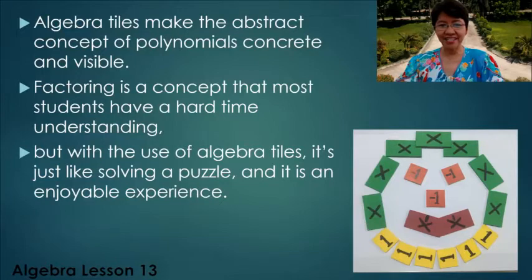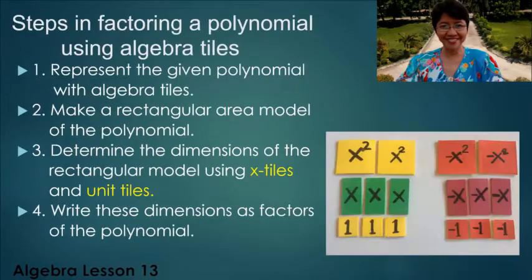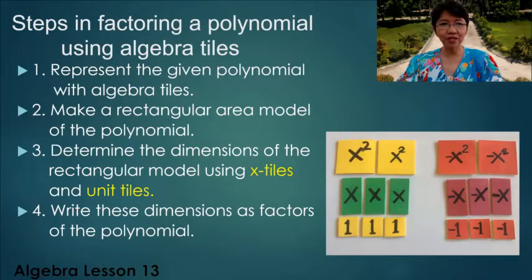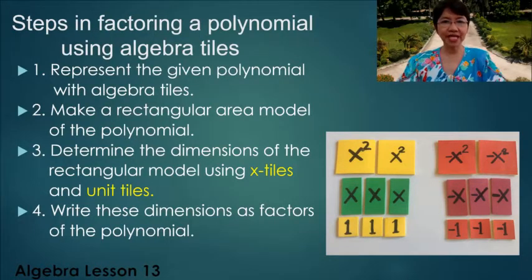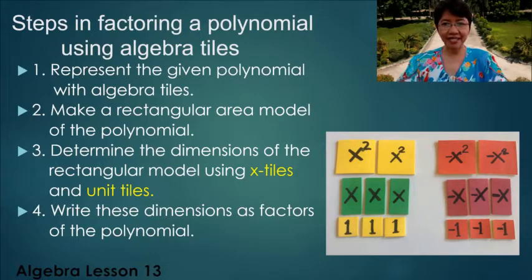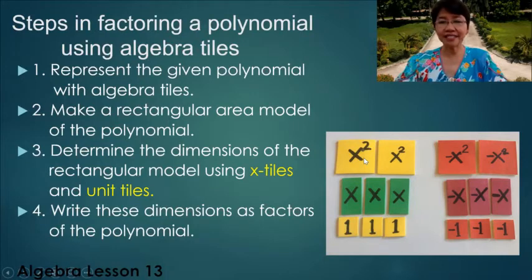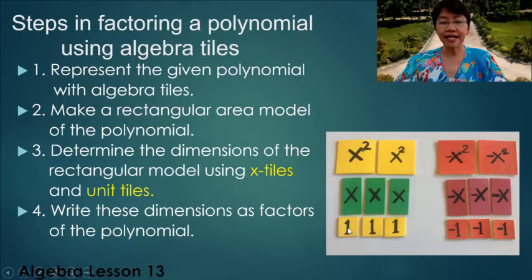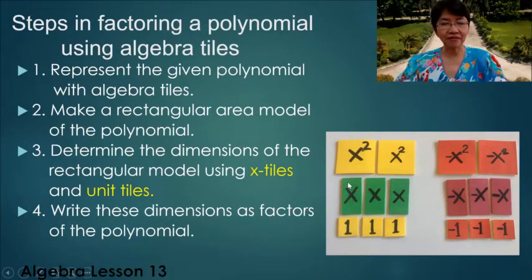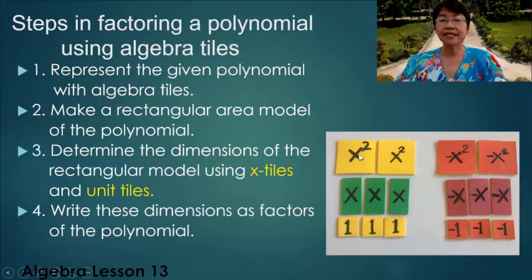But with the use of algebra tiles, it's just like solving a puzzle, and it is an enjoyable experience. Steps in factoring a polynomial using algebra tiles: First, represent the given polynomial with algebra tiles. For my algebra tiles, I represented x² with yellow tiles, unit tiles with yellow small squares, and the x tiles are in green. The dimensions of my x tiles are 1 by x. The counterpart for the negative tiles are all in red.